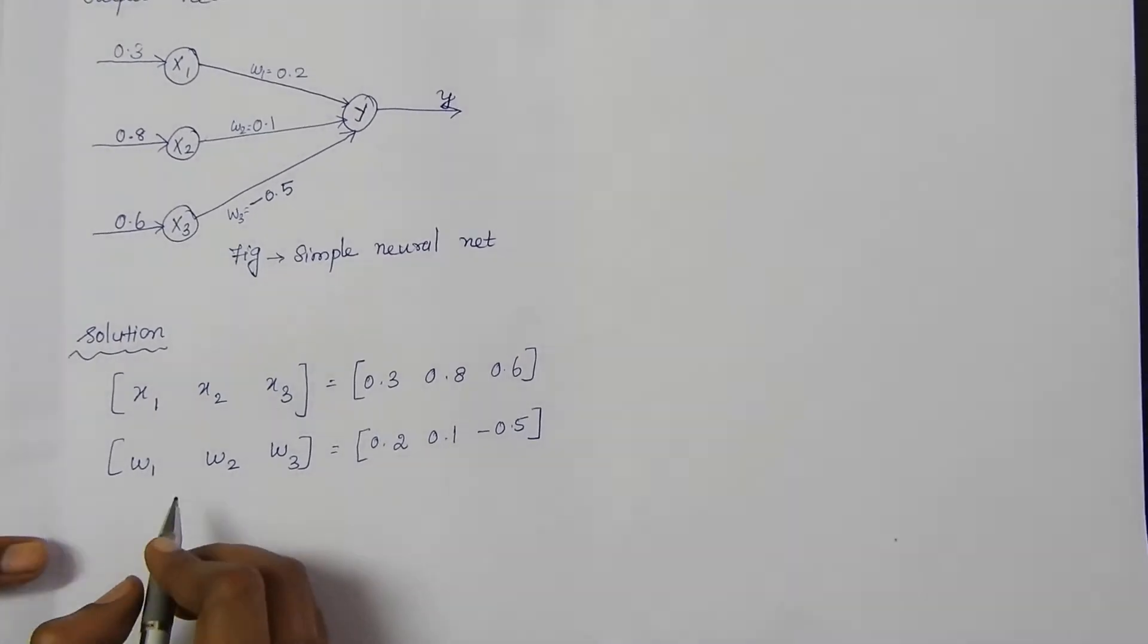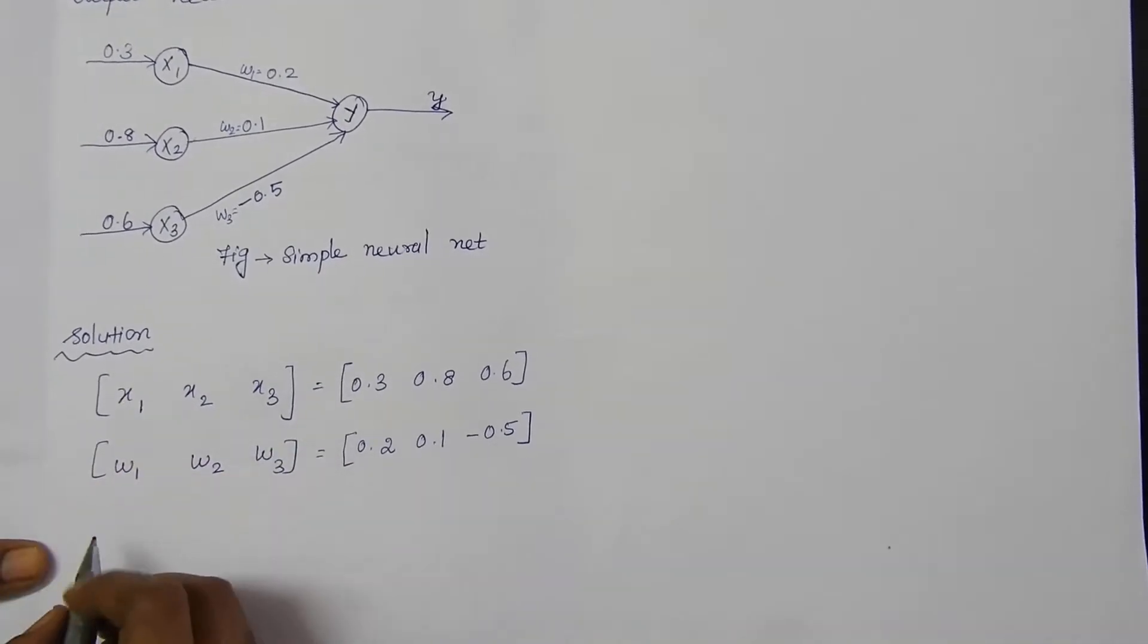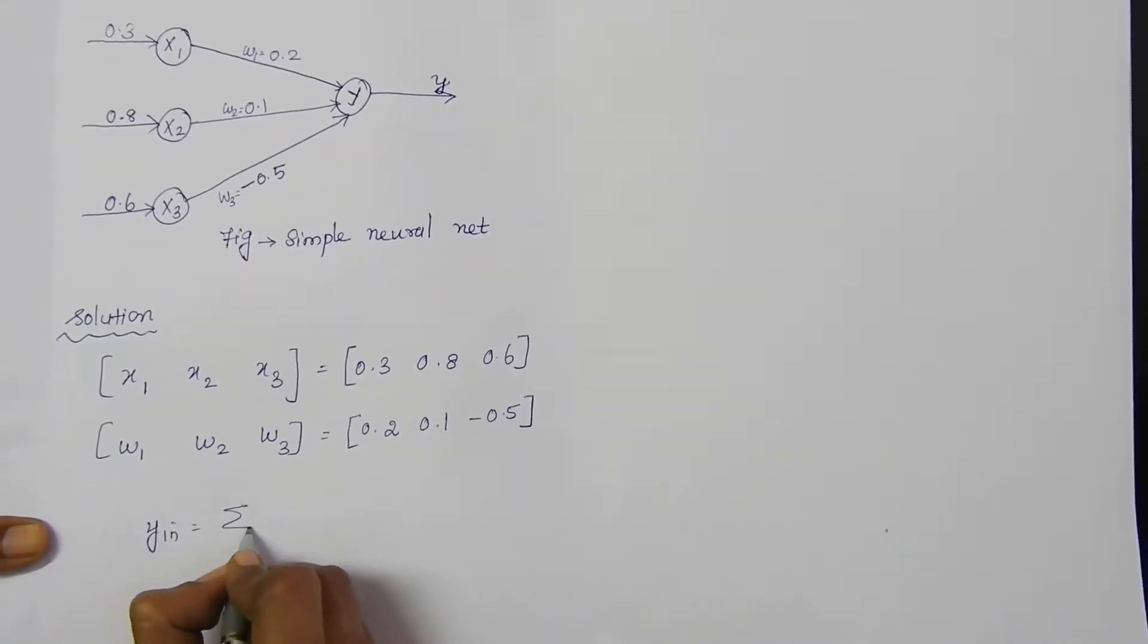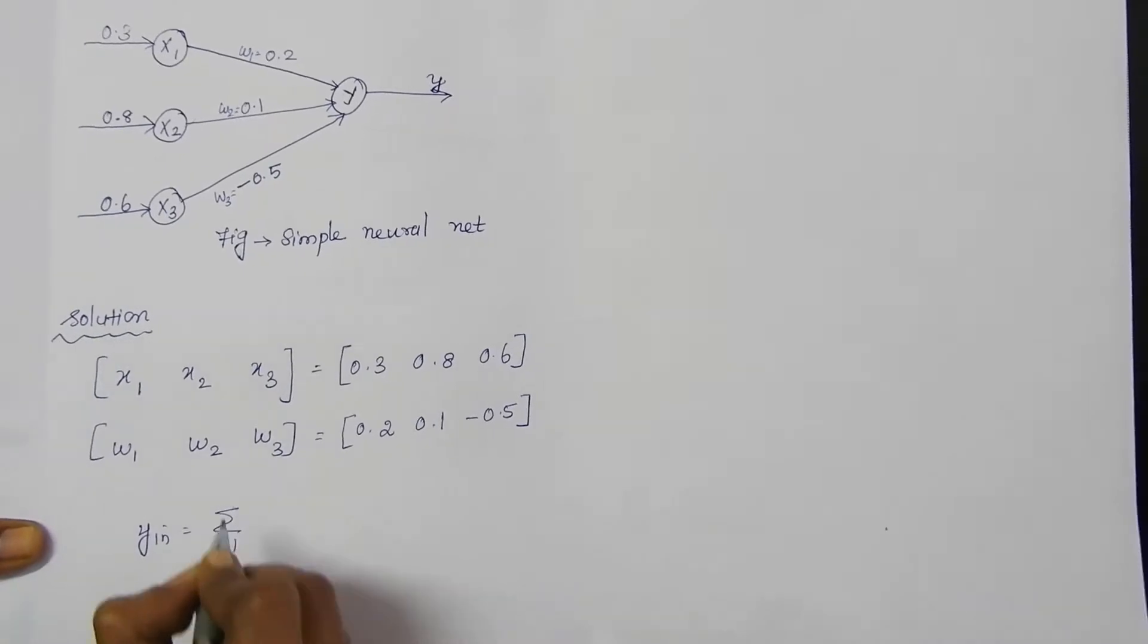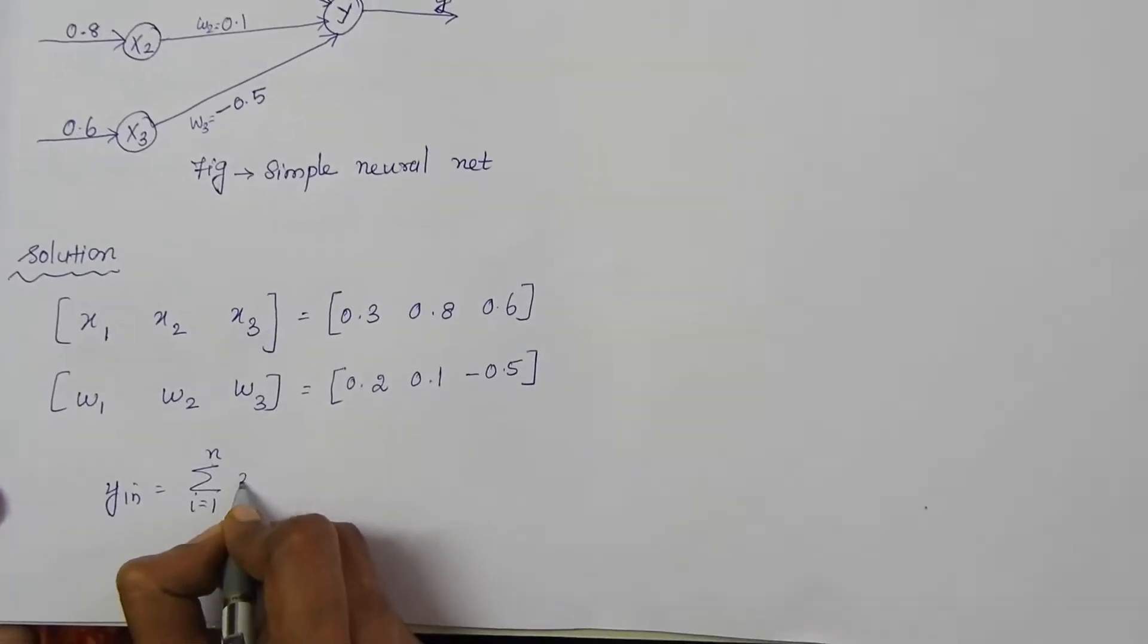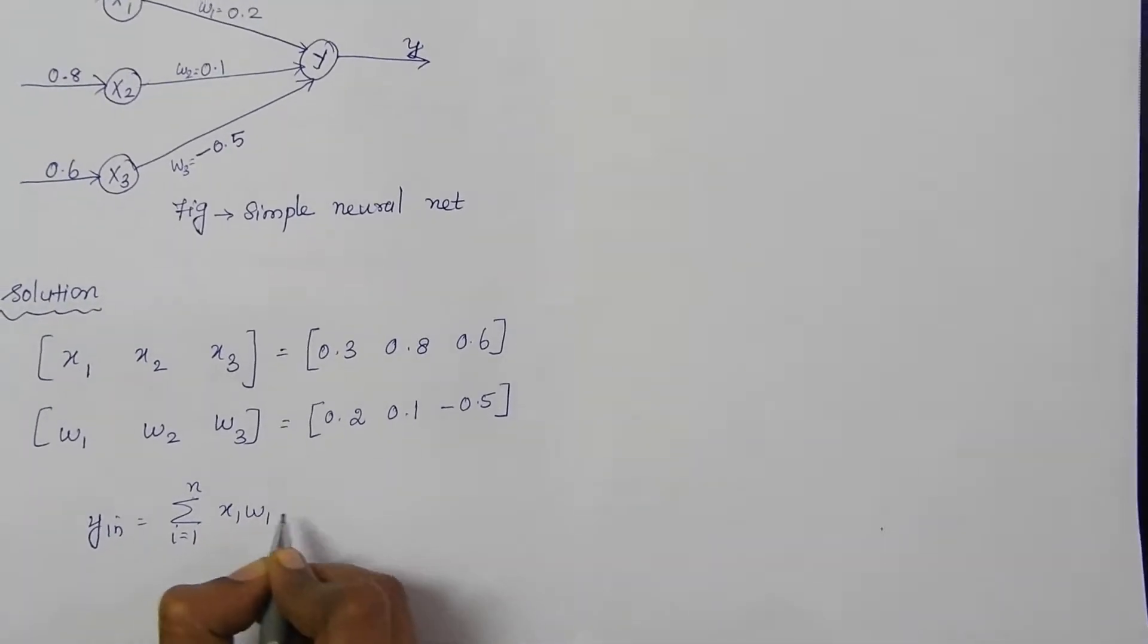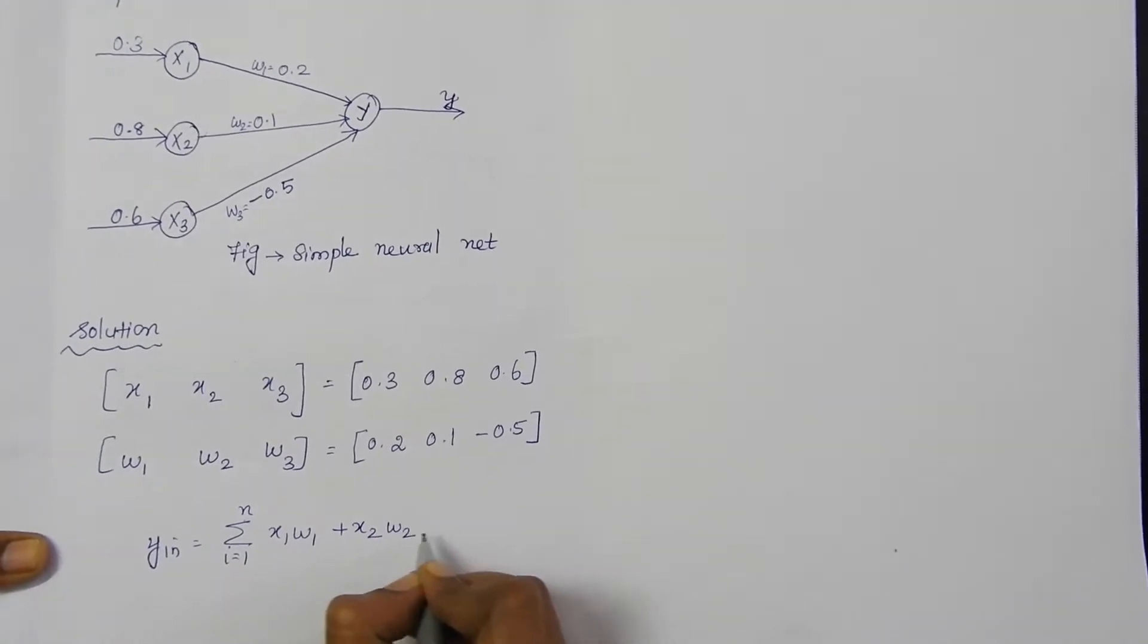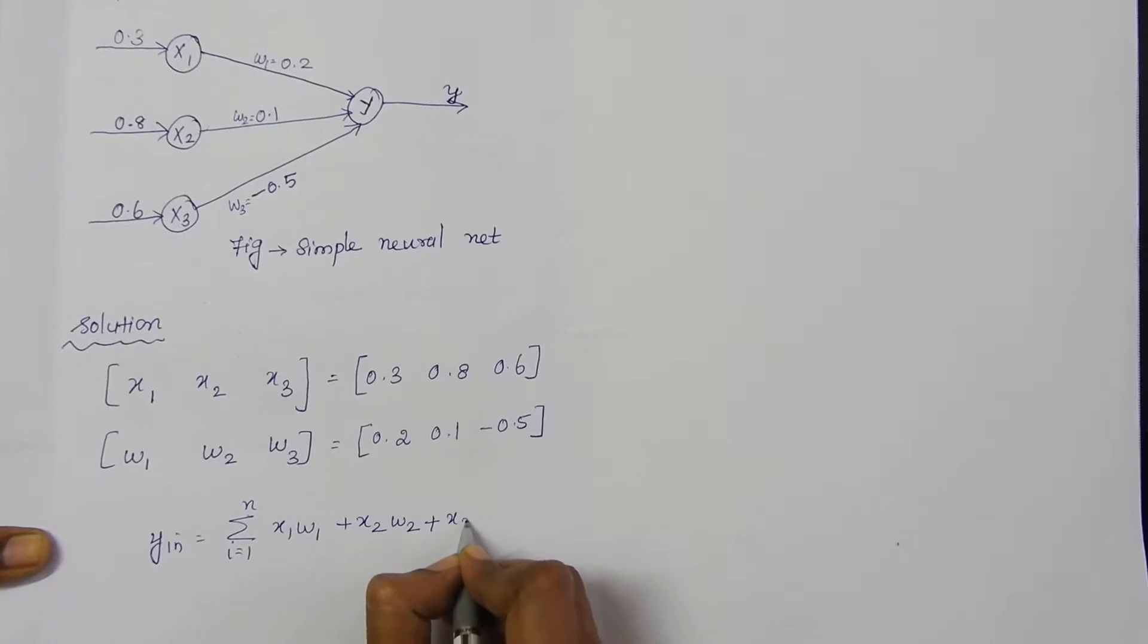The formula for calculating net input is given as y_in equal to summation i equal to 1 to n, x_i w_i, which expands to x1 w1 plus x2 w2 plus x3 w3.